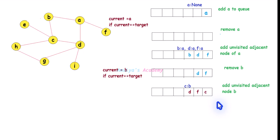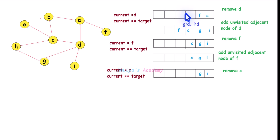Remove B from the queue and check whether it is the target node — no, our target is G. So continue the traversal. Find all unvisited adjacent nodes of B, find their parent node, mark them as visited, and add to the queue. The unvisited adjacent node of B is C, so parent node is B. Next, remove D from the queue — it is not the target. Find all unvisited adjacent nodes of D: G and I. Their parent node is D; mark them as visited and add to the queue.